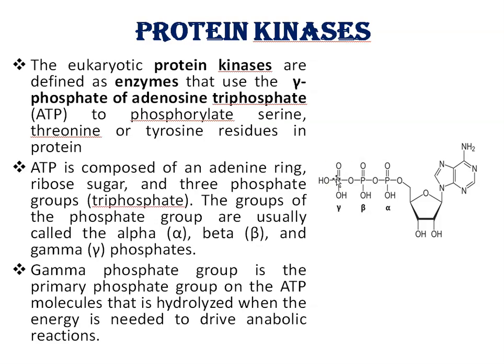The gamma phosphate group is the primary phosphate group on the ATP molecule that is hydrolyzed when energy is needed to drive anabolic reactions. It is typically located farthest from the ribose sugar and has higher energy of hydrolysis than either the alpha or the beta phosphate.